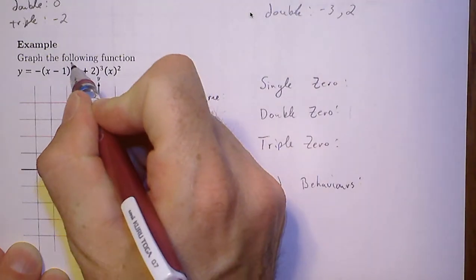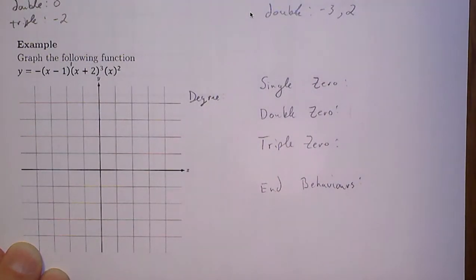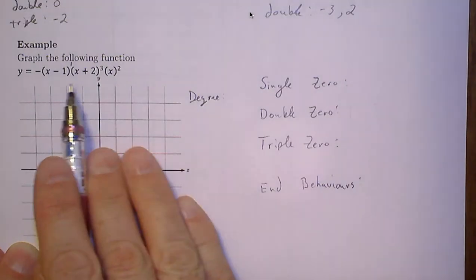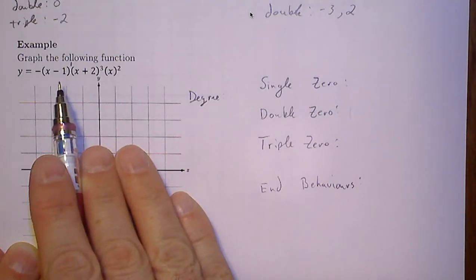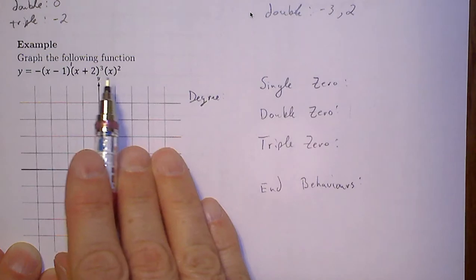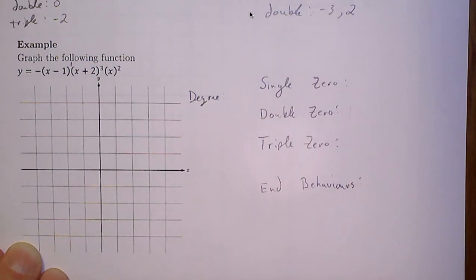Well, the degree of the equation is the highest exponent when it's in that general form. So what do we have to do? This is in factored form. We have to multiply these all out. If we multiplied all these out, what is the highest exponent?